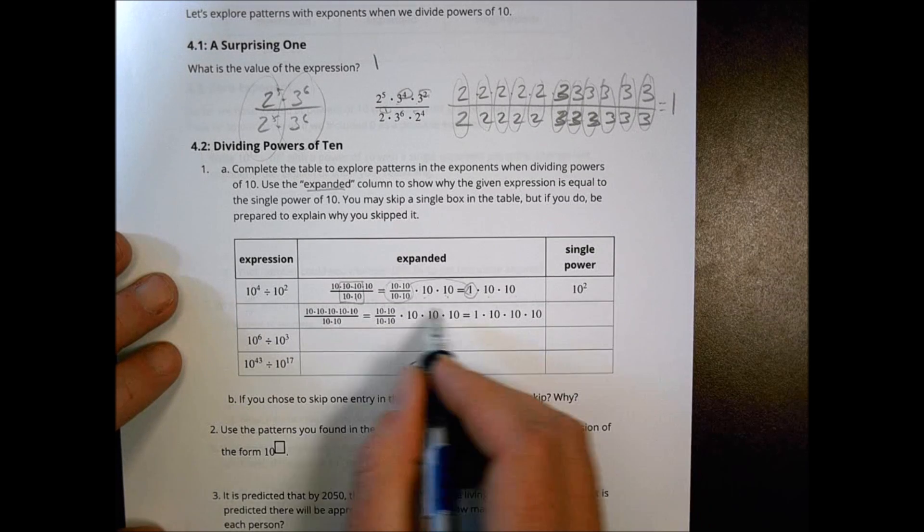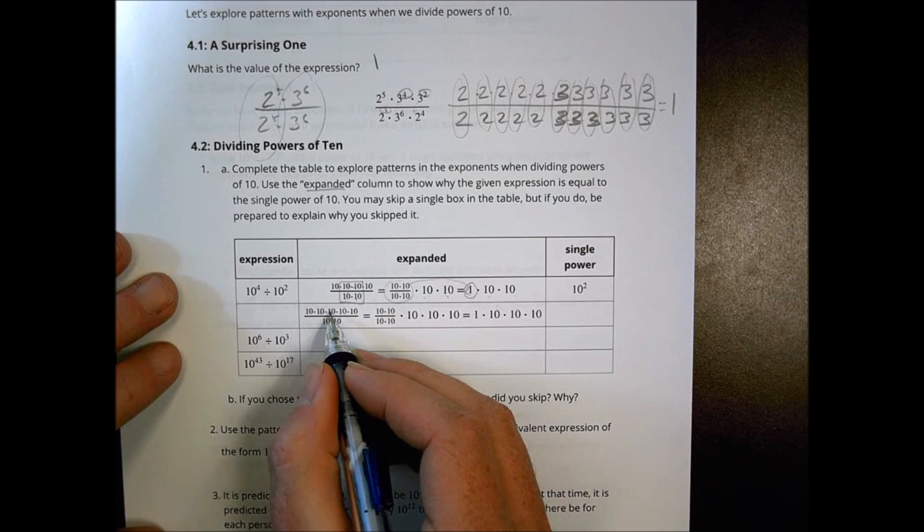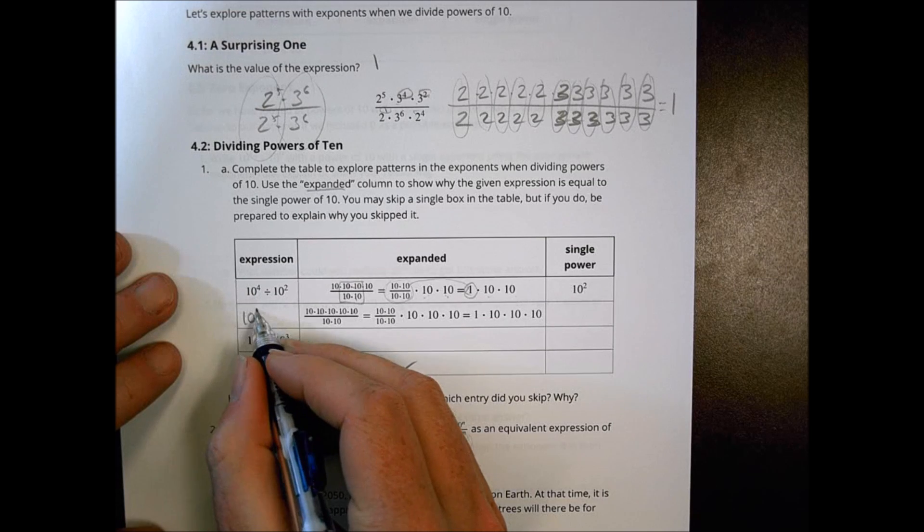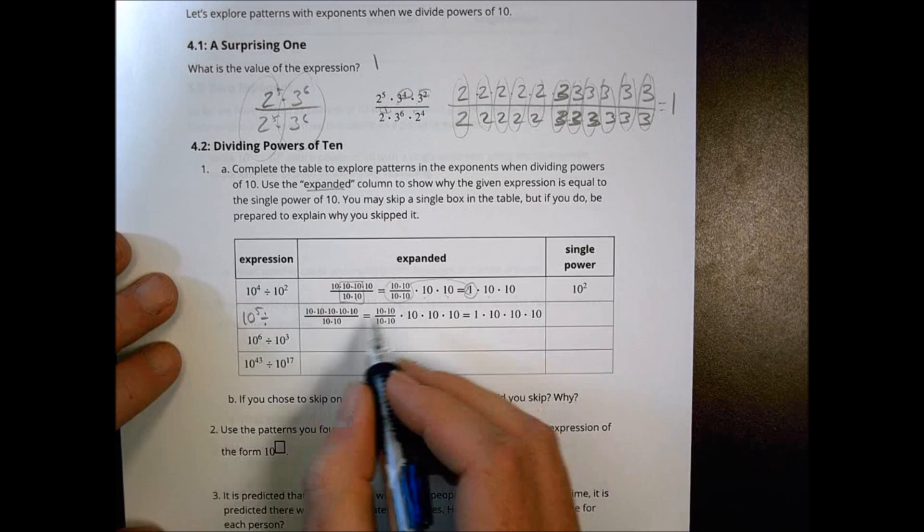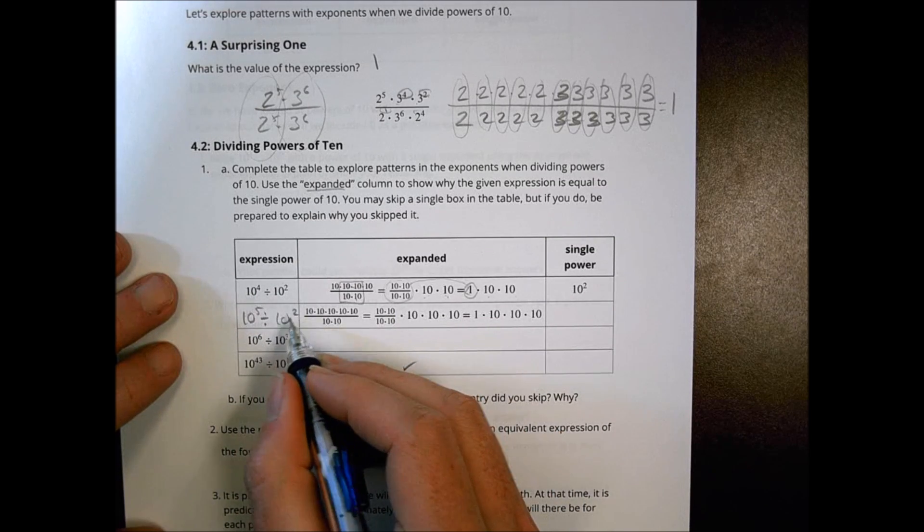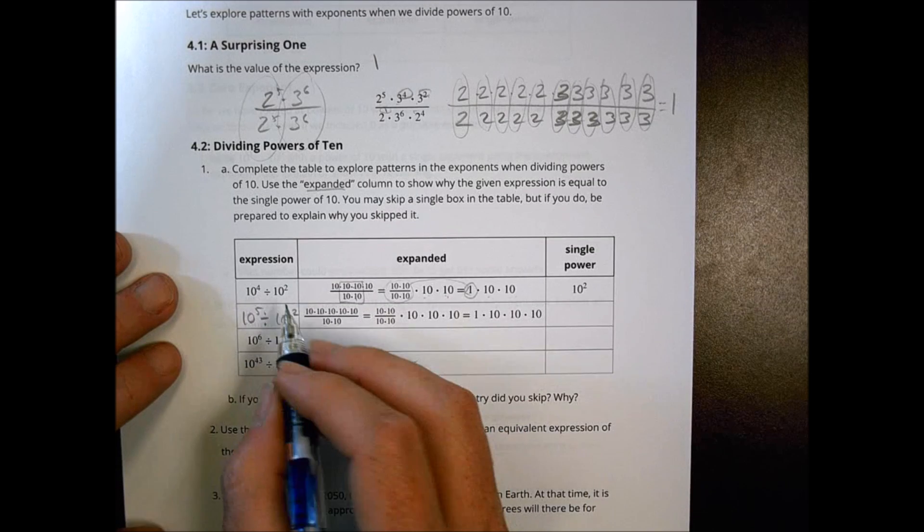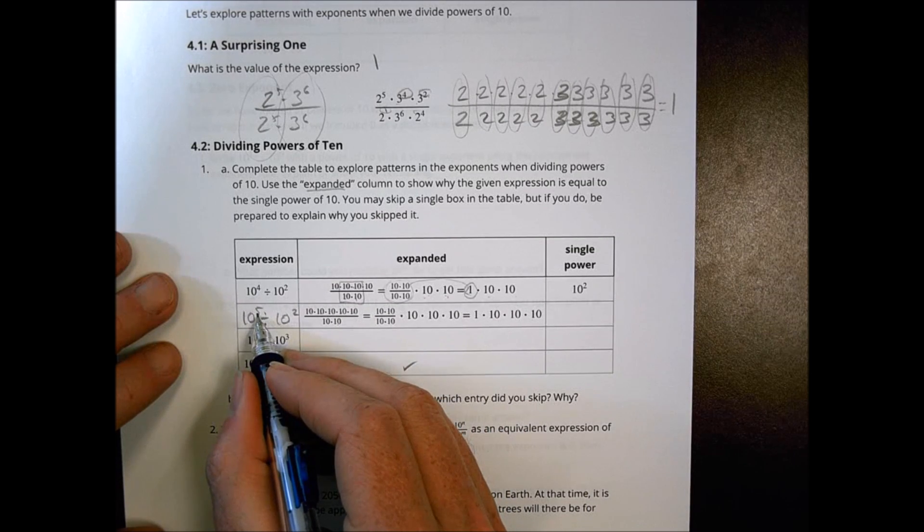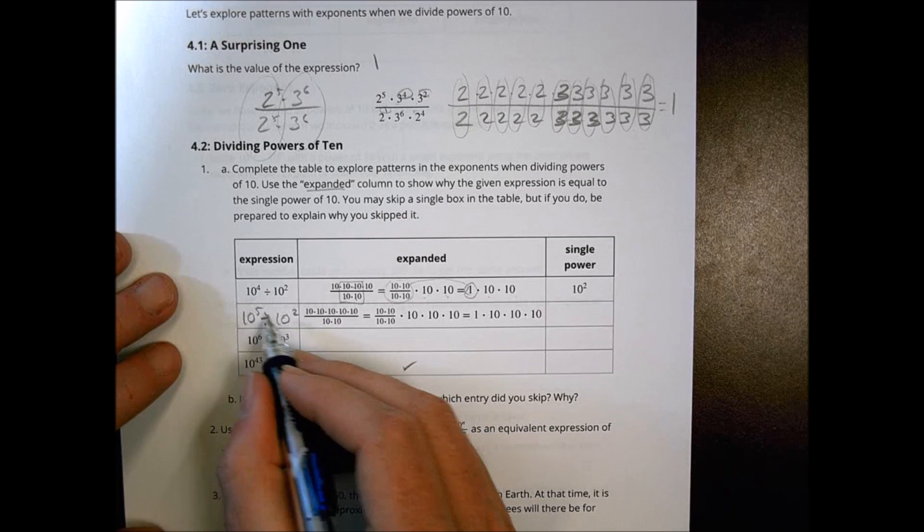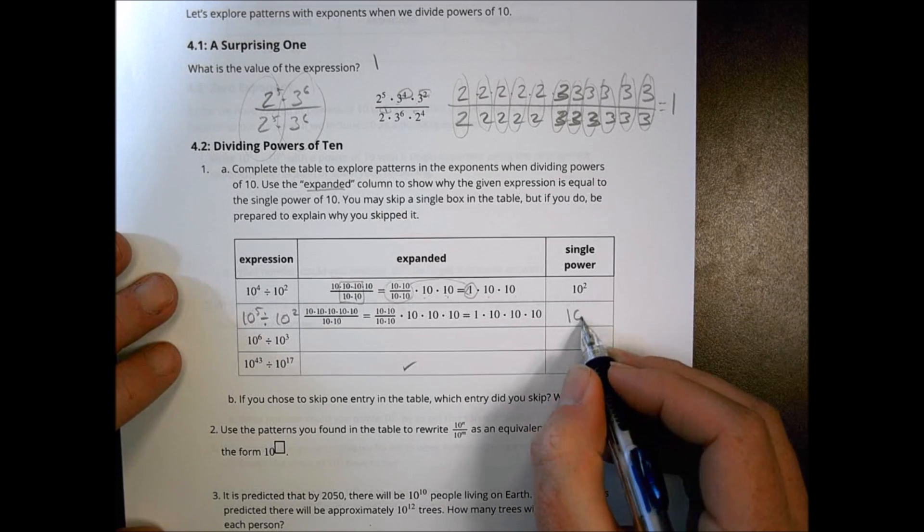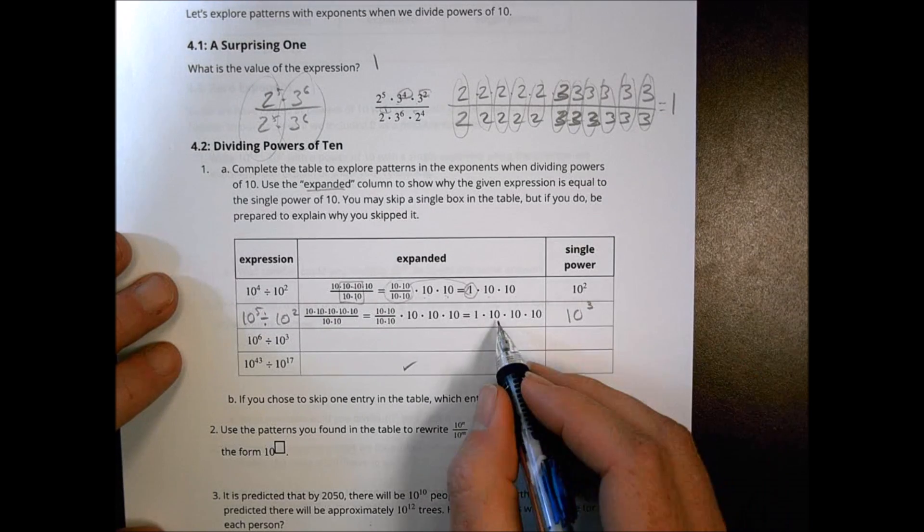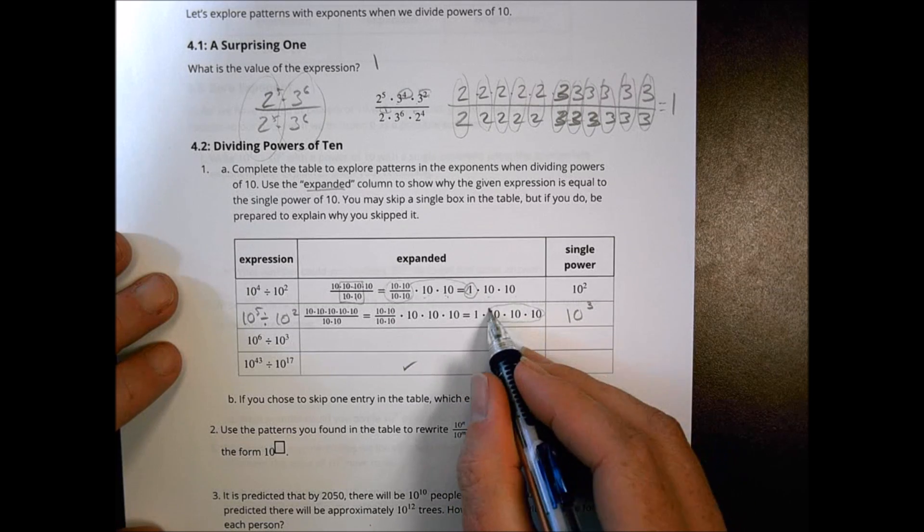All right, so let's see if we can work this one backwards here. Here we have one, two, three, four, five, so we have ten to the fifth power, and we're dividing that by ten squared. The rule seems to be, so far, we take the top one, and we subtract. Five minus two becomes three. So you're going to put ten to the third left over, and that's what we see there.